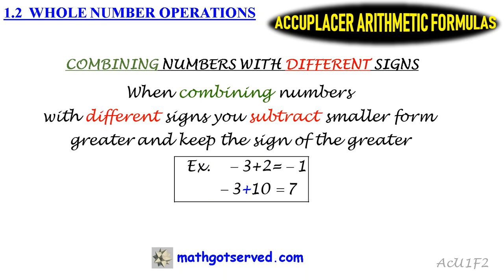The title of the formula we're looking at today is combining numbers with different signs. When combining numbers with different signs, you subtract the smaller number from the greater number and keep the sign of the greater.